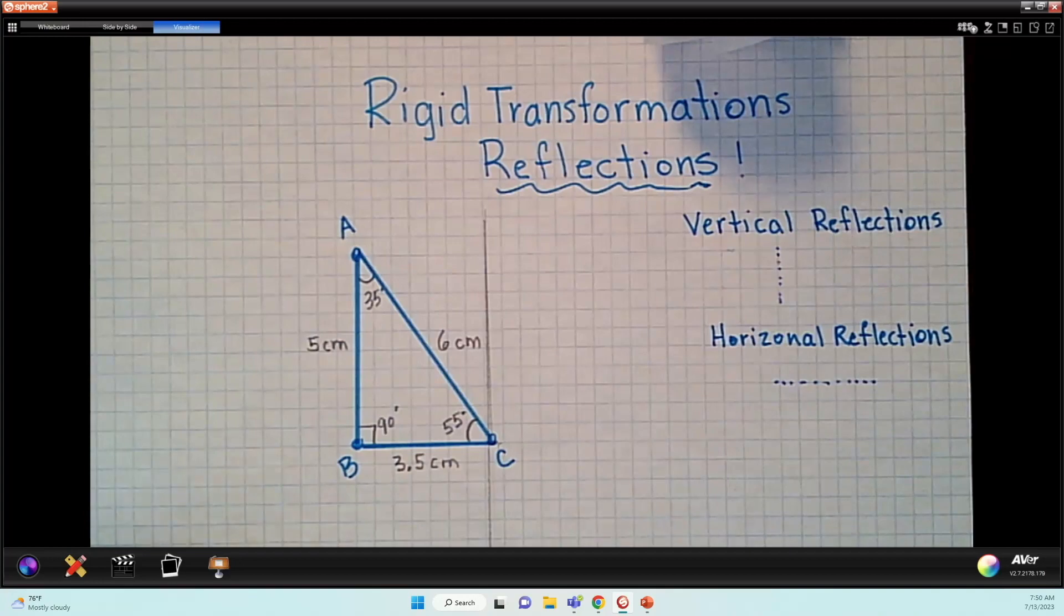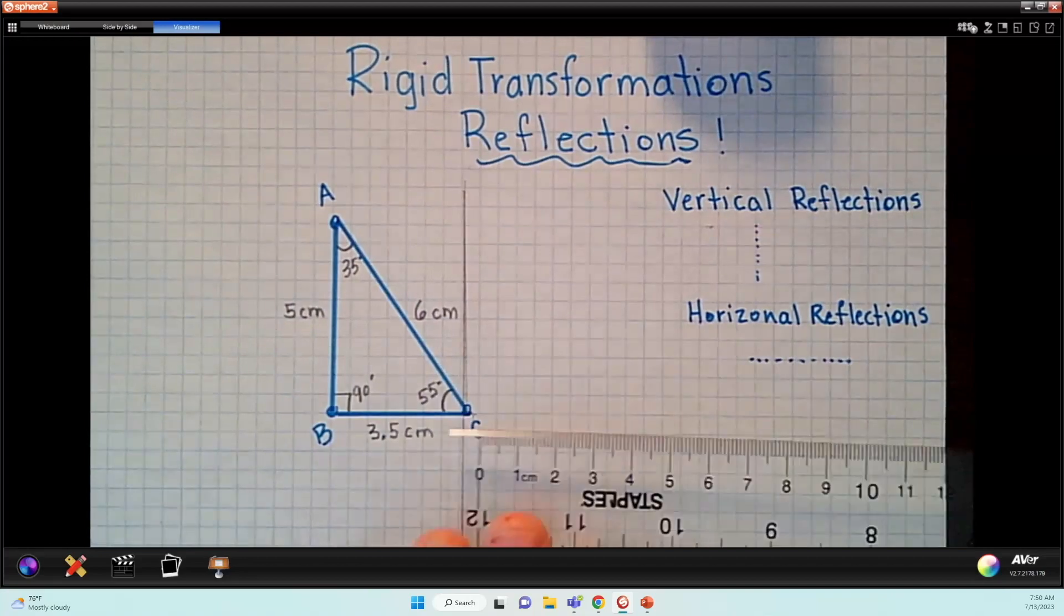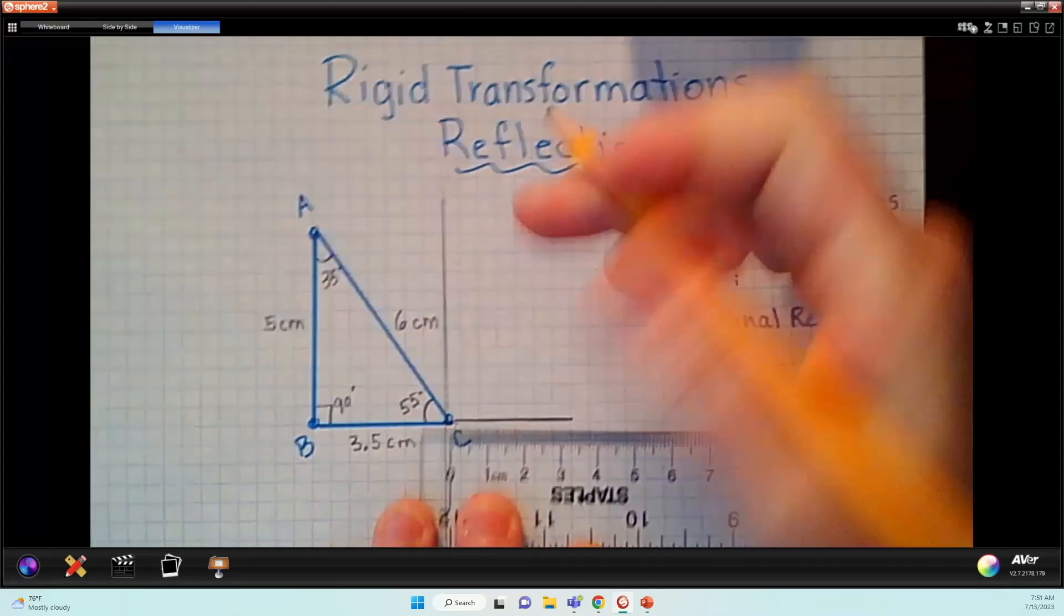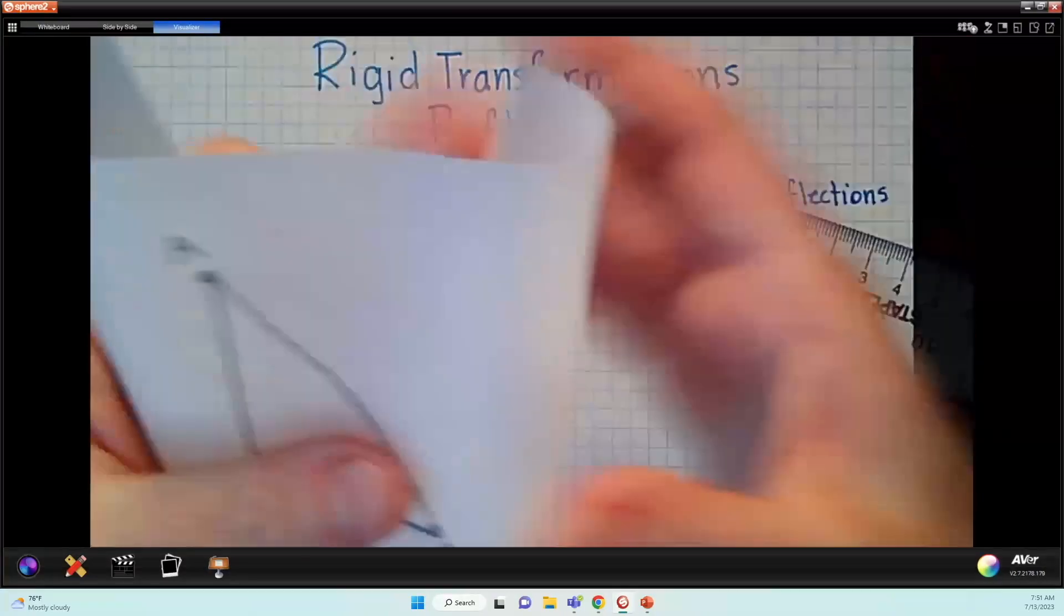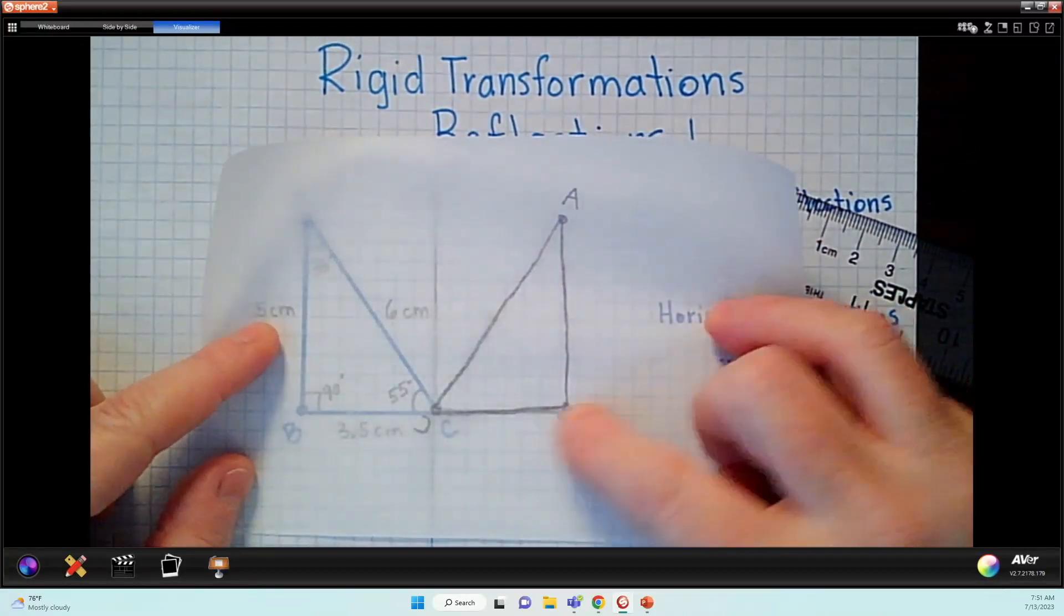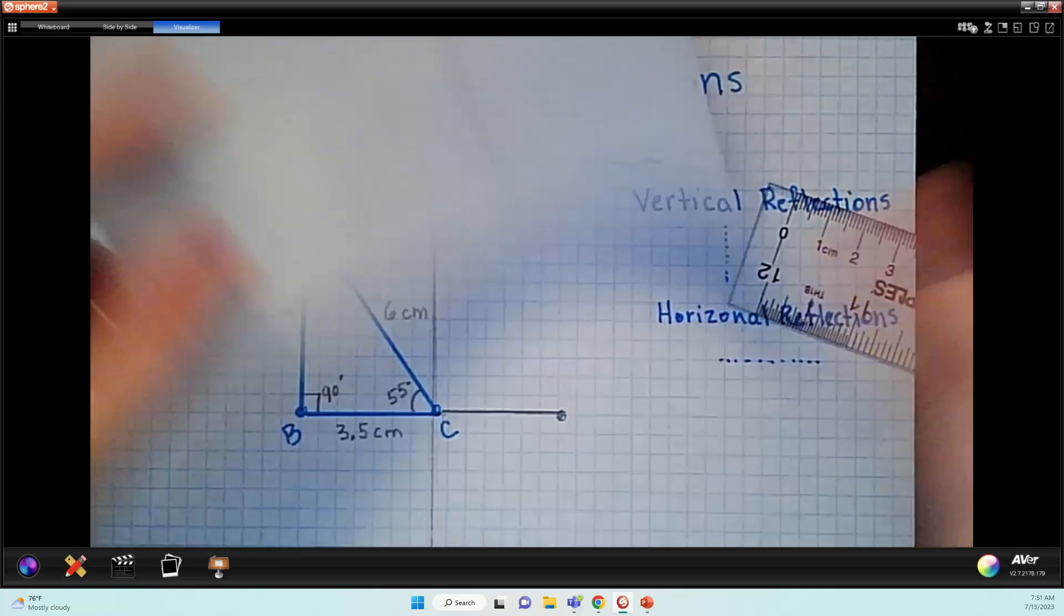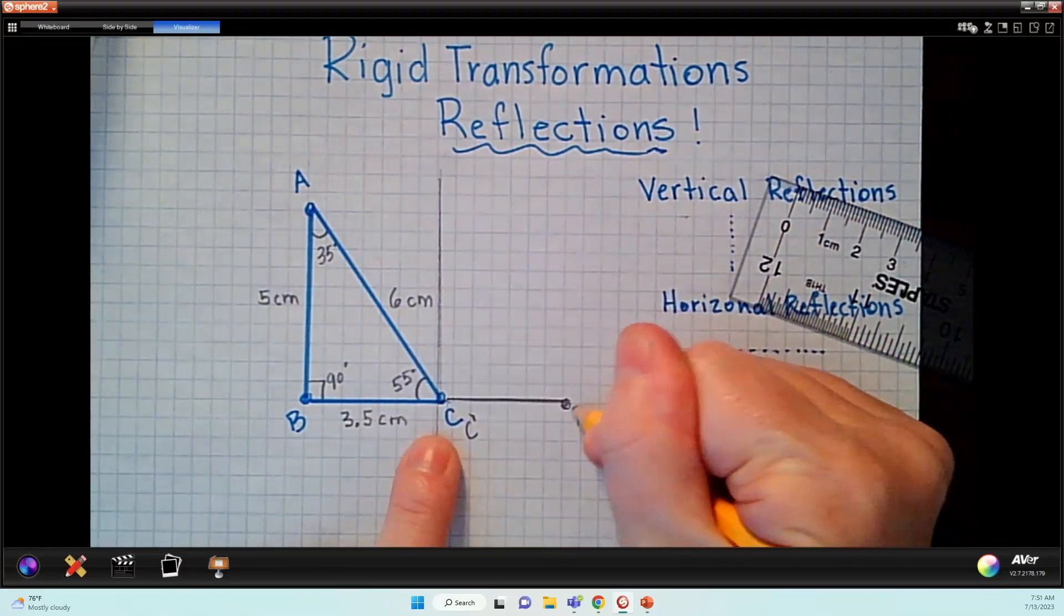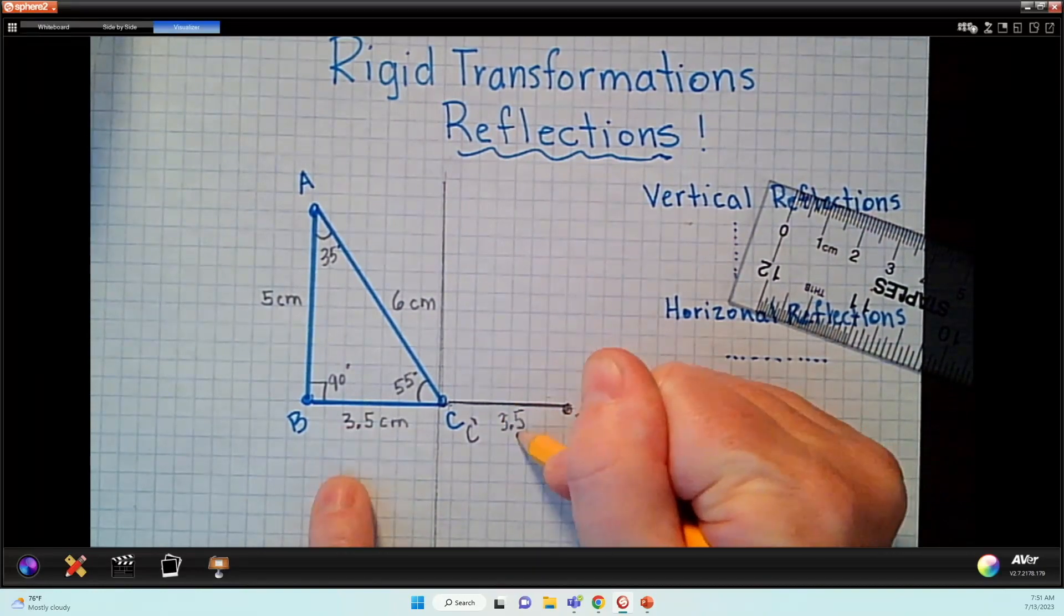So let's see if we can draw it. Now that we have that visual, we can see it. Just like we did with the translations, I can see that this line segment is 3.5 centimeters. So I'm going to reflect it 3.5 centimeters in the opposite direction. Okay, so this line is now reflected. Let's get that parchment paper back up here. And you can see that B is now over here, right? C is not really moving. It's staying in the same spot.